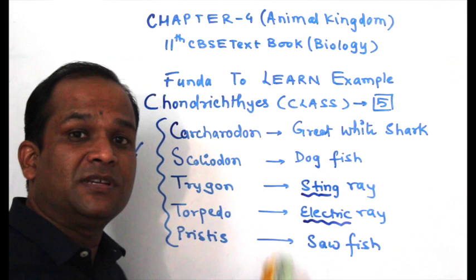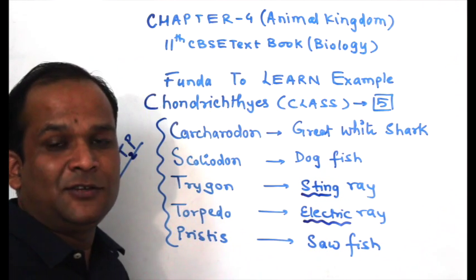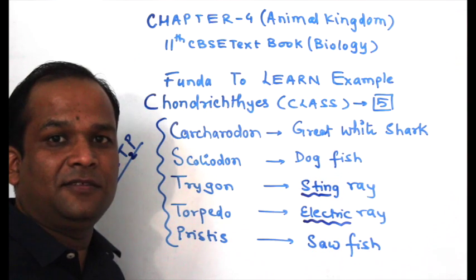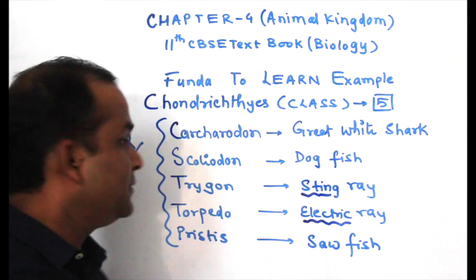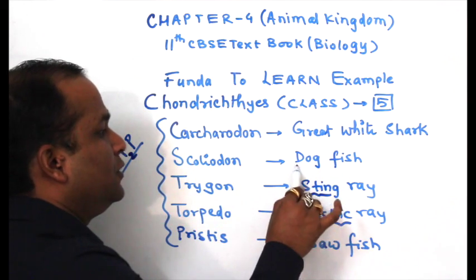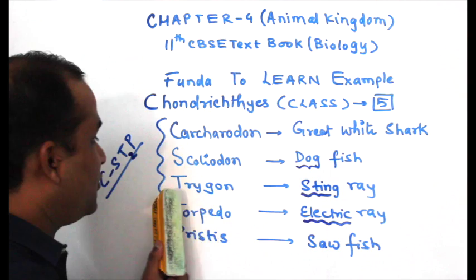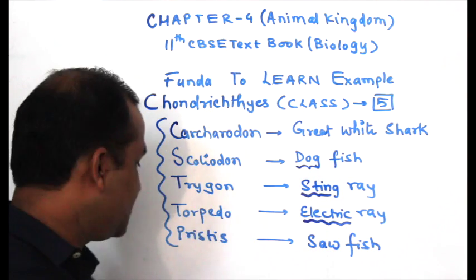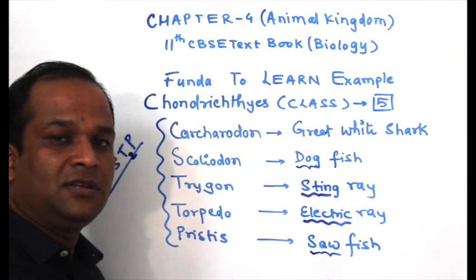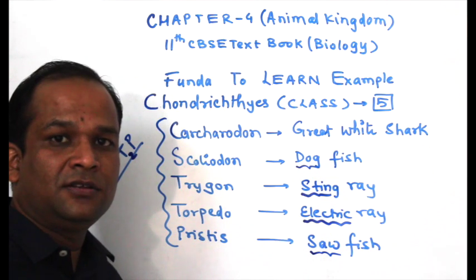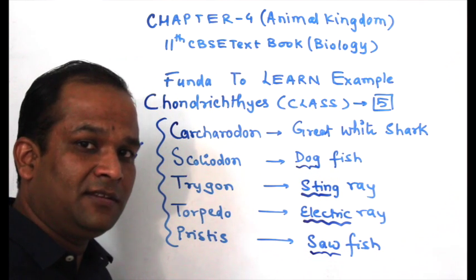Stingray possesses a poisonous sting, therefore it is known as stingray. Carcharodon is the great white shark. Scoliodon is dogfish, as its smelling power equals that of a dog. Trygon is stingray, Torpedo is electric ray. And Pristis is sawfish — its mouth is shaped like a saw, therefore it is known as sawfish. So five examples are given in total.